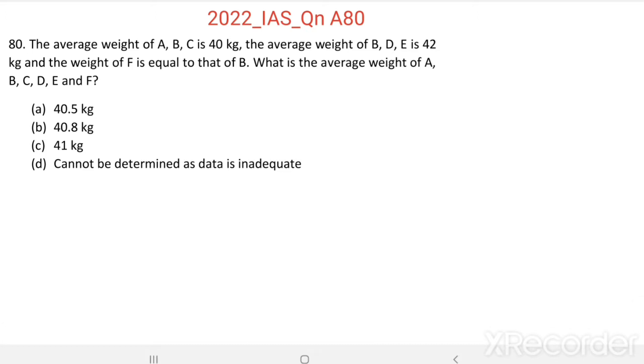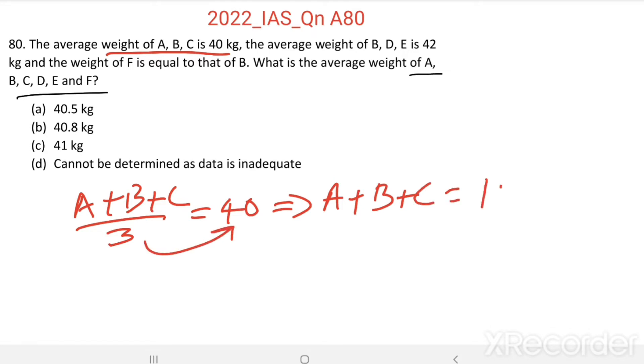Here we want to find average weight of these 6 persons. For that, it is given that average weight of A, B, C is 40 kg. So we can write this as A plus B plus C divided by 3 equal to 40 kg. This implies A plus B plus C equal to 120, taking this 3 to the right side. This is the first equation.